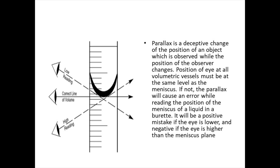One important term is equivalence point. Equivalence point is the point in a titration at which the number of moles of titrant becomes exactly equal to the number of moles of titrate. That point is what we call the equivalence point. This is all for this video. Thank you.